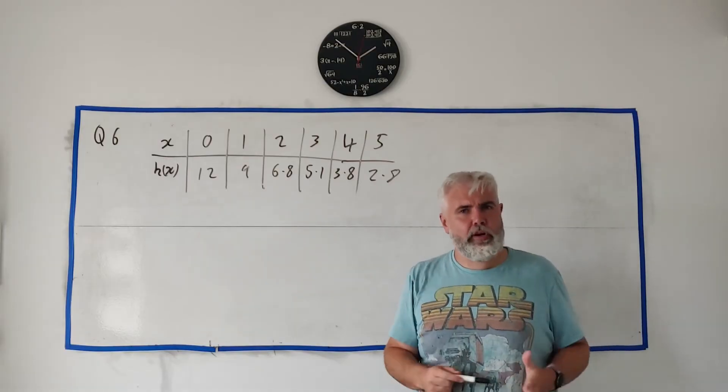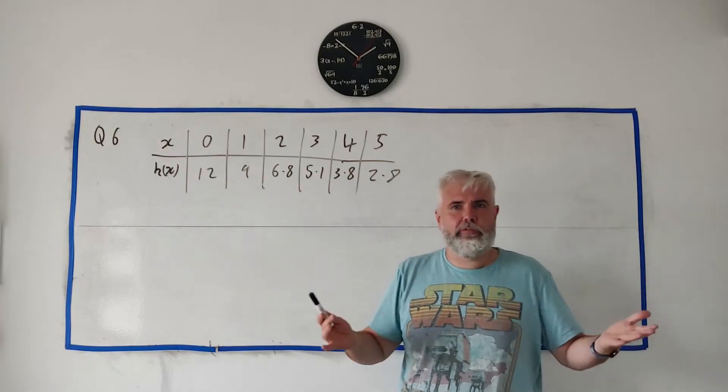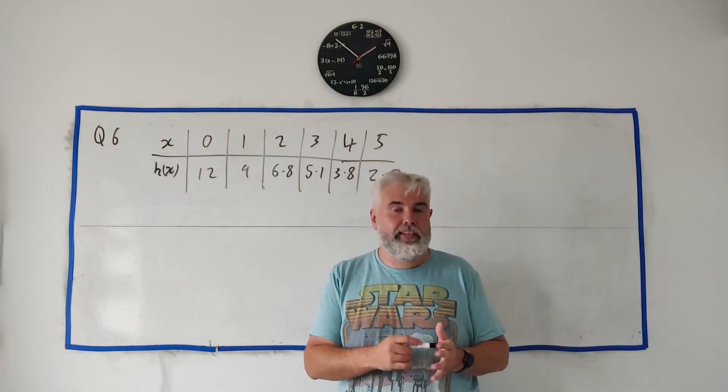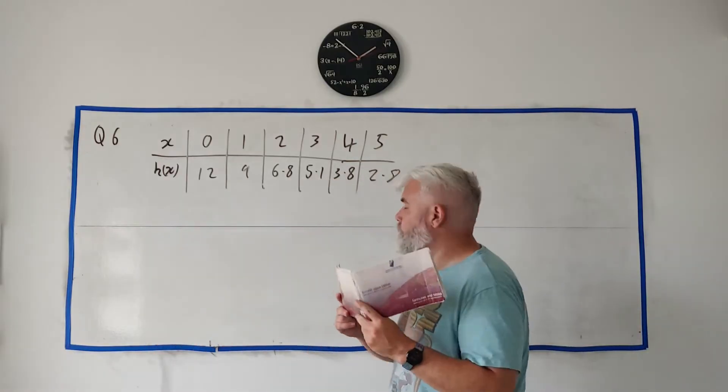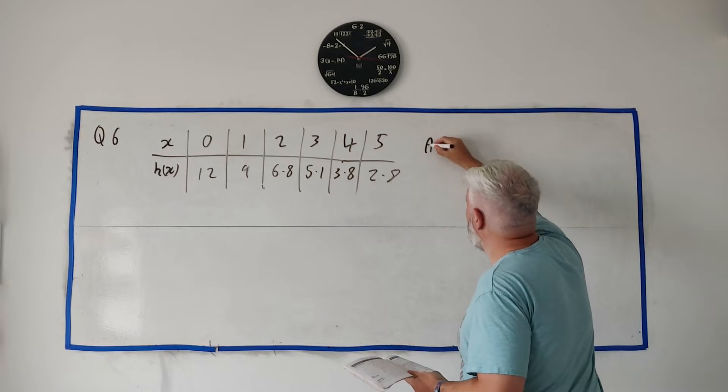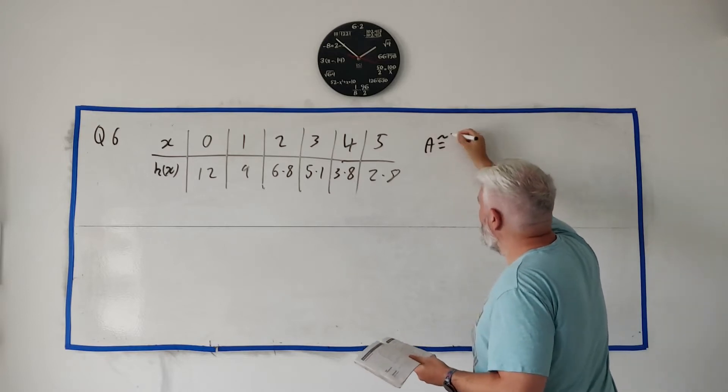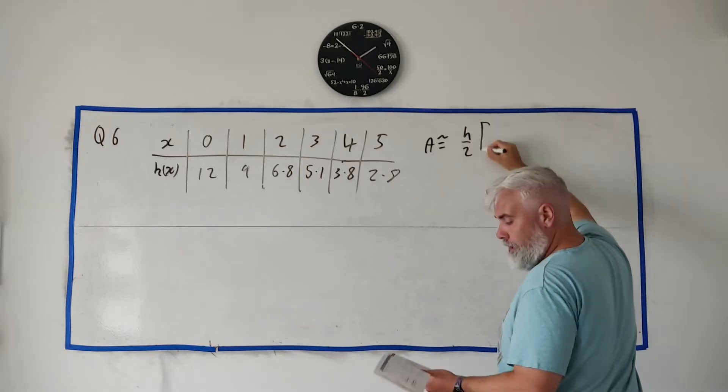And then they even tell us the answer Liam gets when he uses the trapezoid rule: he gets 32.1. And they ask us just to show that, to recreate that basically. So first thing we need is the trapezoid rule.